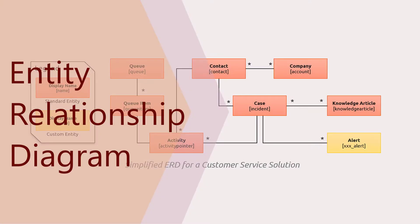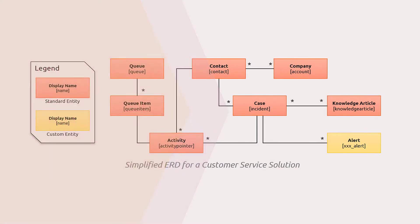The entity relationship diagram is a type of diagram that illustrates how Dynamics 365 or Power Platform entities — such as contacts, companies, and cases — relate to each other within the solution we're building. An entity relationship diagram helps to understand how data is structured and how the Dynamics 365 entity model will be designed.